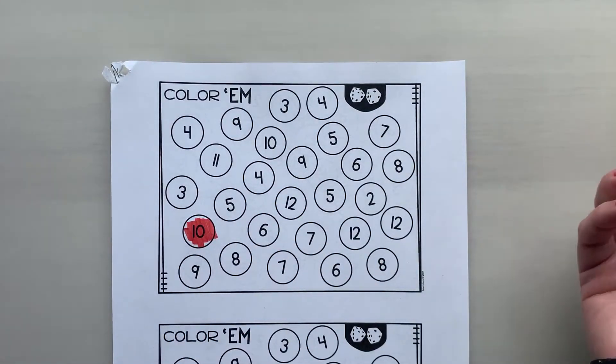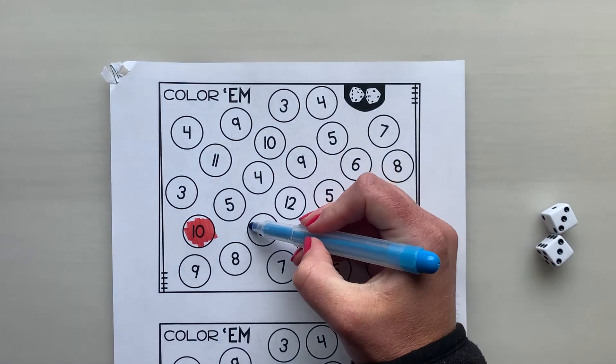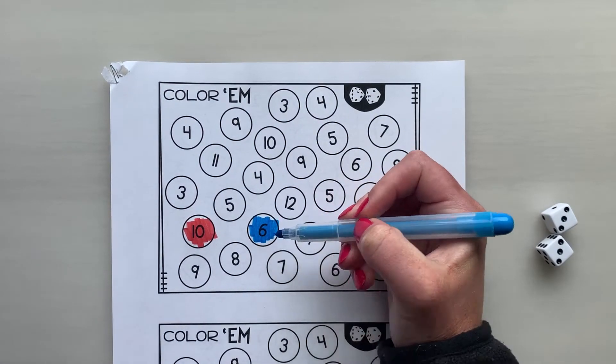And then player two would roll. Three plus three is six. Color in six on the game board.